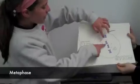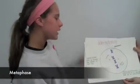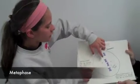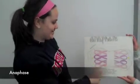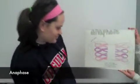Metaphase: chromosomes line up across the center of the cell, and each chromosome is connected to a spindle fiber at its centromere. Anaphase: sister chromatids separate into individual chromosomes and are moved apart. In telophase, they move to opposite ends of the cell and lose their distinct shape.